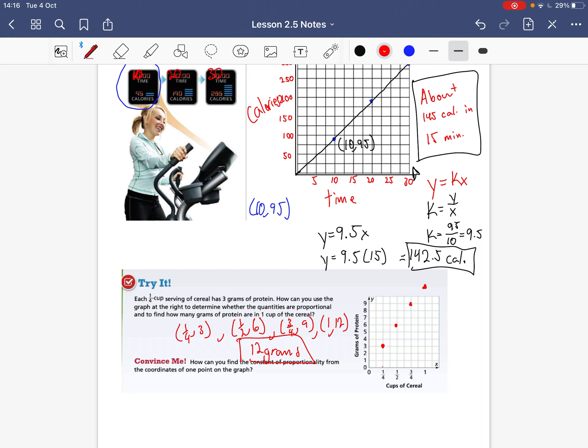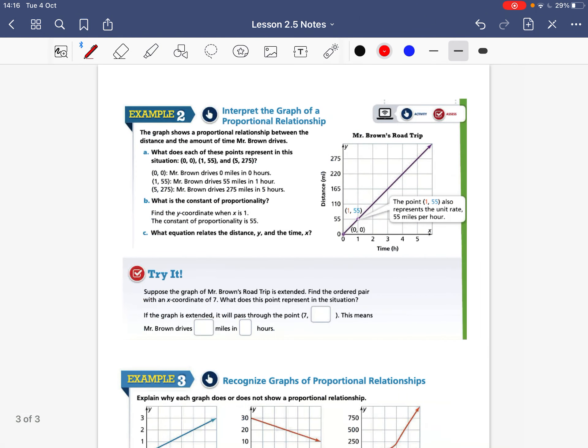Another way that we can do this is we can see that x and y where it's one-fourth is three then we have one-half which was six and then three-fourths we're just going up by one-fourth each time. So if we go up by one-fourth again that gives us one, this goes up, we're going up by three each time, so this would be twelve.